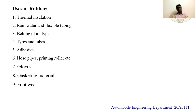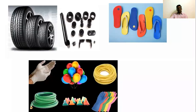What are the uses of rubber? Rubbers are used in thermal insulation, rainwater and flexible tubing, belting of all types, tires and tubes, adhesives (glue), hose pipes, printing rollers, gloves, gasket material, and footwear. Products formed from rubber include tires, pipes, footwear, balloons, gloves, and water pipes.